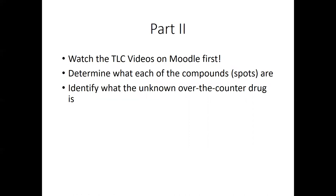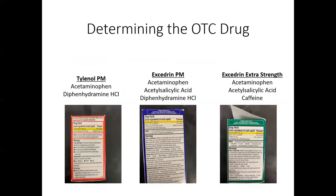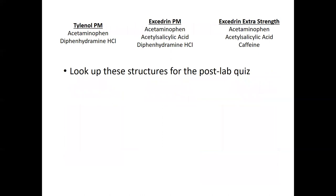And then part two, again, watch the TLC videos on Moodle first, and then determine what each of the compounds are by trying to figure out how far up each of the known compounds traveled up the TLC plate relative to your unknown solution. And then try to figure out what the unknown over the counter drug is. So these are the options that we give you. There's Tylenol PM, there's Excedrin PM, and there's Excedrin extra strength. They all contain different numbers of compounds and different types of compounds. And so once you can verify what the compounds are in your unknown, you can then sort of match it up with one of these three. And really what you should do is look up each of those structures for the post lab quiz, just so that you get a good sense of exactly what they look like. And most importantly, what the differences are in their polarities.